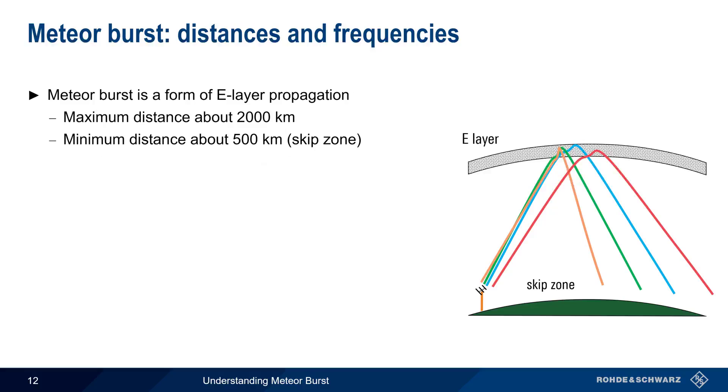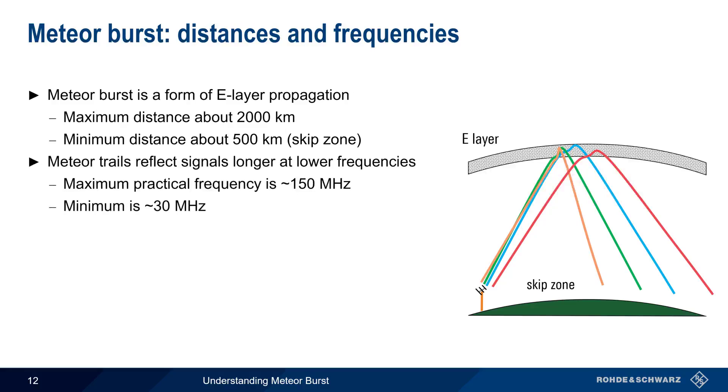With regards to frequencies, the ionization created by meteor trails is usable for longer periods of time at lower frequencies. The maximum practical frequency for meteor burst communications is about 150 MHz, with a minimum of about 30 MHz. It should also be noted that ionized meteor trails expand due to the rapid and extreme heating during burn-up, and thus signals reflected from meteor trails may experience Doppler shift. The amount of shift is frequency dependent, but can be as high as 2 kHz at the higher end of the frequency range found in meteor burst communications.